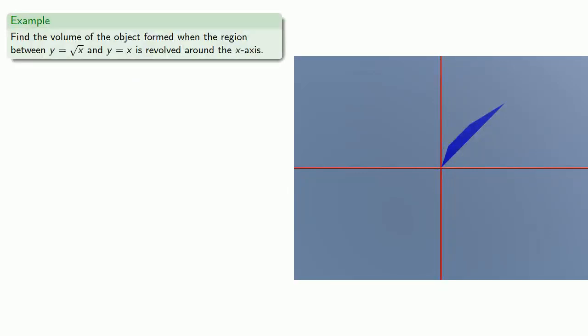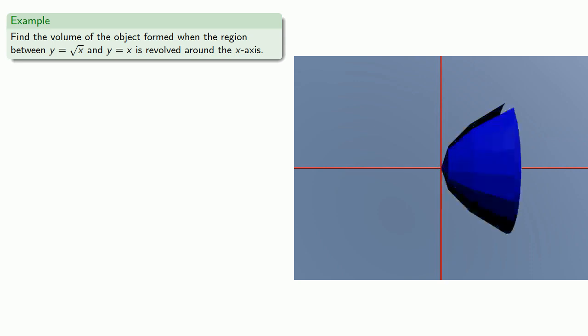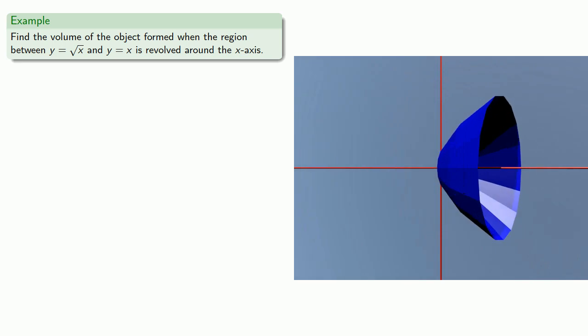For example, say we want to find the volume of the object formed when the region between y equals square root of x and y equals x is revolved around the x-axis. That gives us a figure like this, which is sort of a cup.